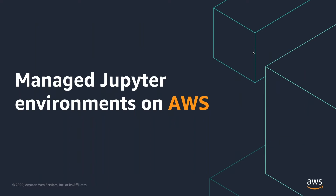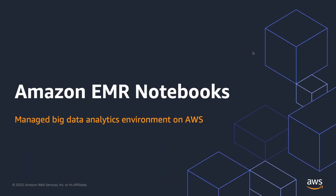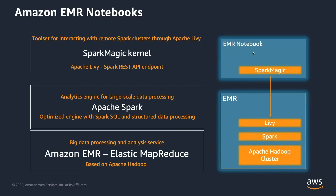Now let's look at some managed Jupyter environments on AWS. There are two takeaways from today. The first key takeaway: you can consider Jupyter Notebooks on AWS — those managed Jupyter environments — to be the front end to many AWS compute services. I will introduce you to four of those. The first is for big data analysis: Amazon EMR Notebooks. When you start up an EMR Notebook, you get access to the underlying EMR cluster. When you're dealing with big data — say, hundreds of millions of rows in a data warehouse — running on a single server will take a very long time.